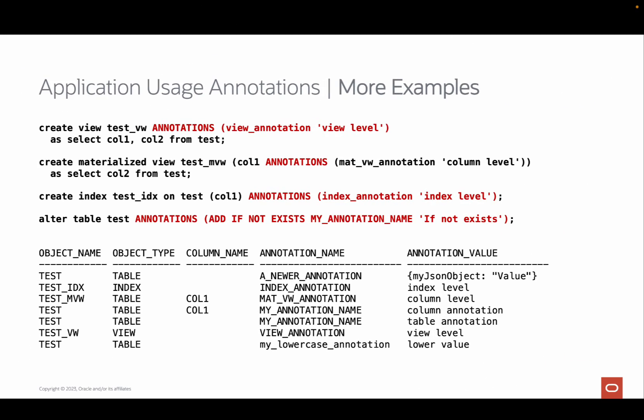In the previous examples, only tables and table columns were used. However, the same annotation syntax is valid for views, materialized views, indexes, and more. In the first example, an annotation is added while creating a view at the view level. In the second example, an annotation is added to a column while creating a new materialized view. And in the third example, an annotation is added to a new index.